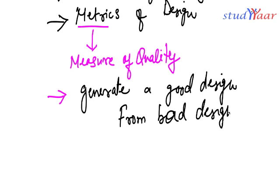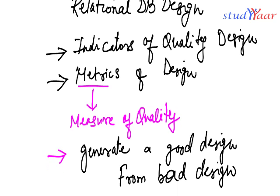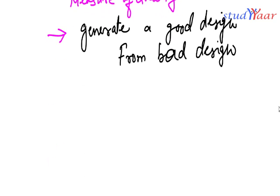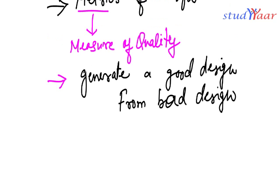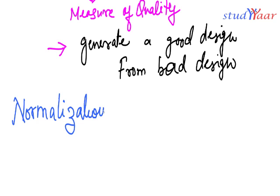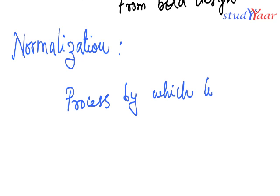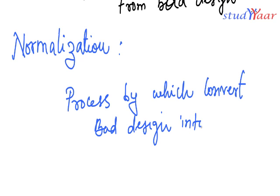So these are the things that we are going to talk about in the session on relational database design. My relational database design is going to cover all these things. Now I am going to introduce to you a concept called normalization. So what is normalization?